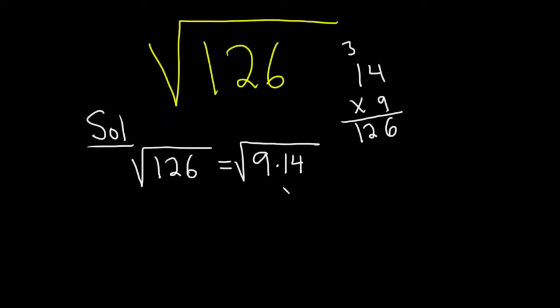And then we can break this up into a product. So this is equal to the square root of 9 times the square root of 14.